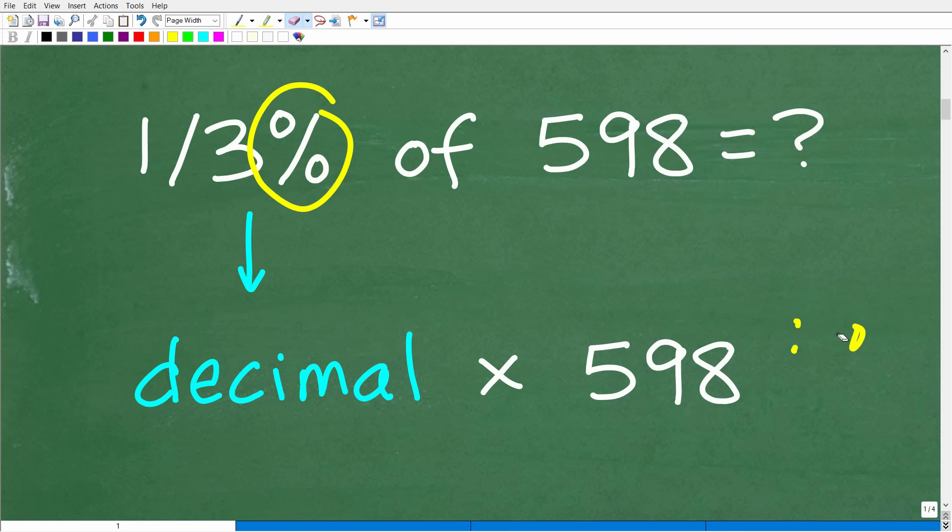But if you're looking at this problem and you're thinking, all right, well, that's what I need to do here. I got to change this into a decimal. Now, remember, this is a fraction of a percent. It's not like 7%. I have one third. So I'm going to have to think of this as a decimal or as a fraction. Okay. So either way, you're going to have to write this percent as a decimal or a fraction, and then multiply it by 598. And doing this all in your head would be very difficult.